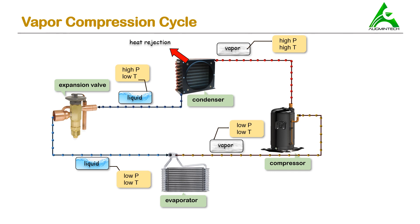This liquid refrigerant, which is at low pressure and low temperature, now enters the evaporator coil. The job of the evaporator is to take heat from the conditioned space and give it to the refrigerant. Because of the heat absorption by the refrigerant when it passes through the evaporator coil, it gets boiled — but the temperature does not change; however, the phase changes. This liquid refrigerant gets converted to vapor refrigerant. So the refrigerant which enters the evaporator coil is liquid at low pressure and low temperature, and the refrigerant which comes out of the evaporator coil is vapor in phase and it has low temperature and low pressure.